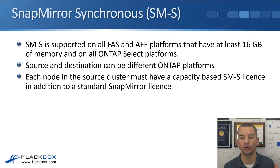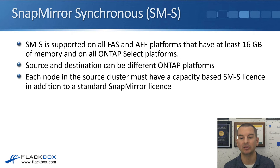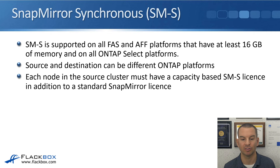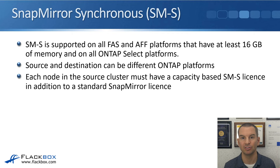SnapMirror synchronous is supported on all FAS and AFF platforms with at least 16 gigabytes of memory and on all ONTAP Select platforms. The source and destination can be different ONTAP platforms — for example, you could replicate from an AFF system to an ONTAP Select system. Each node in the source cluster requires a capacity-based SnapMirror synchronous license in addition to the standard SnapMirror license. For asynchronous SnapMirror you only need the SnapMirror license, but for synchronous you also need the SMS license.